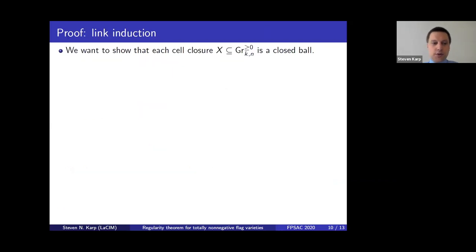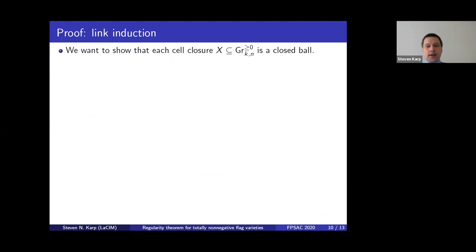Amplituhedra are projections of the totally non-negative Grassmannian, so to understand amplituhedra better we first wanted to understand the totally non-negative Grassmannian better. This is also a more widespread phenomenon involving other spaces such as associahedra, related to the work Vincent Pilaud spoke about.